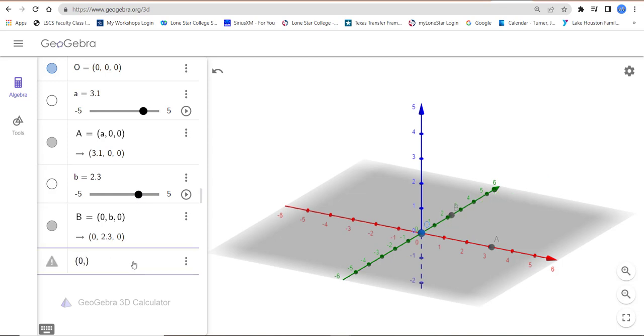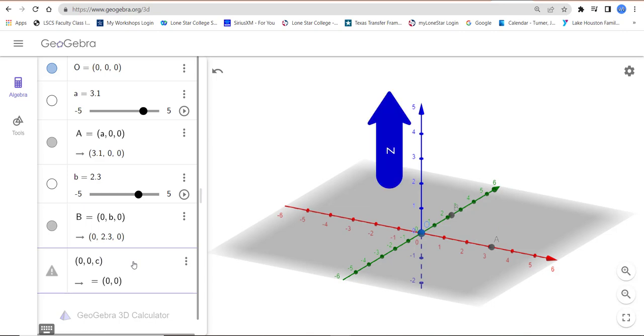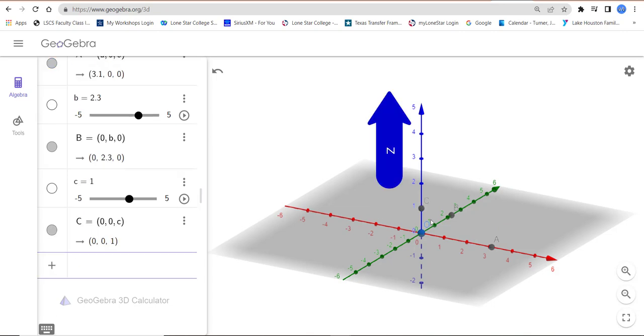And 0, 0, C, you guessed it. So there's our point for the z-axis.